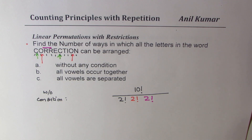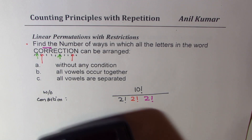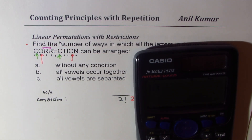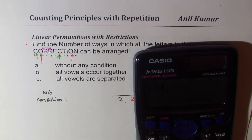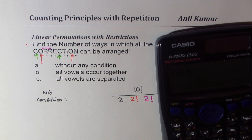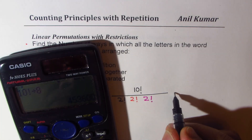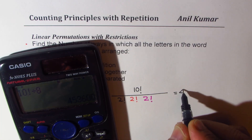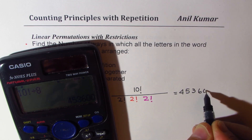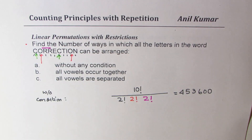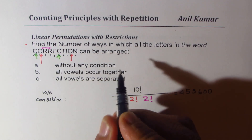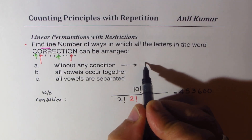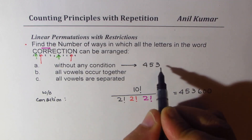Let's take a calculator and find the exact value. We have 10 factorial divided by 2 times 2 times 2, which is 8. Dividing by 8, we get the very big number 453,600. So these are the total number of ways without any condition. The answer for the first one is 453,600.